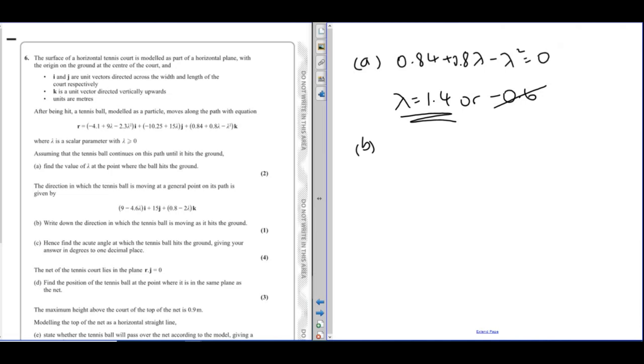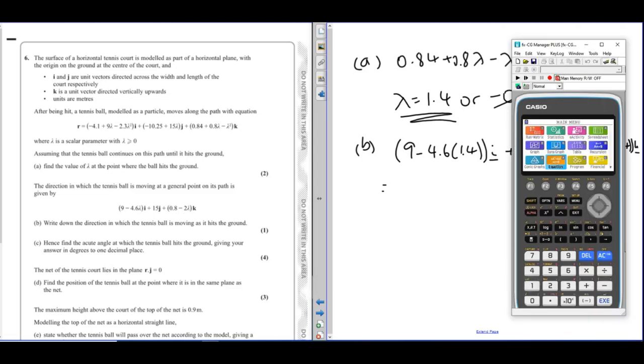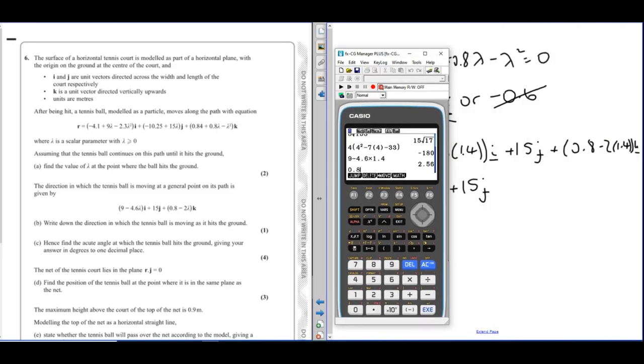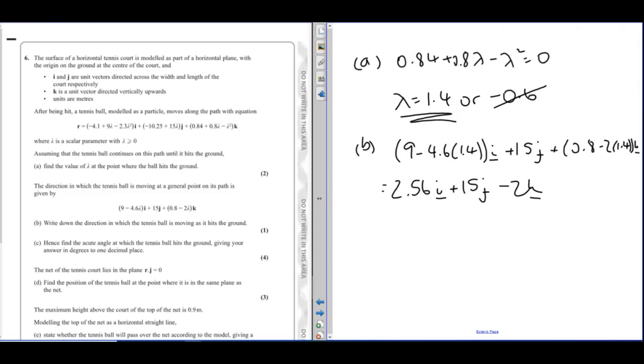Then it gives us the direction that our tennis ball is moving in. It wants us to write down the direction which the tennis ball is moving as it hits the ground. So we've just worked out lambda is 1.4 when it hits the ground. So 1.4 into this. So 9 minus 4.6 times 1.4, 9 plus 15j plus 0.8 minus 2.4. Work these out. This is the direction that our tennis ball is moving in.